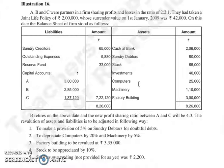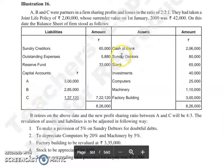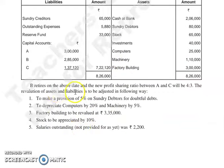Balance sheet items include: Sundry Creditors, Outstanding Expenses, Reserve Fund, Capital Accounts of A, B and C on the liabilities side; and Cash at Bank, Sundry Debtors, Stock, Investments, Computers, Machinery, and Factory Building on the assets side. B retires on the above date and the new profit sharing ratio between A and C will be 4:3.